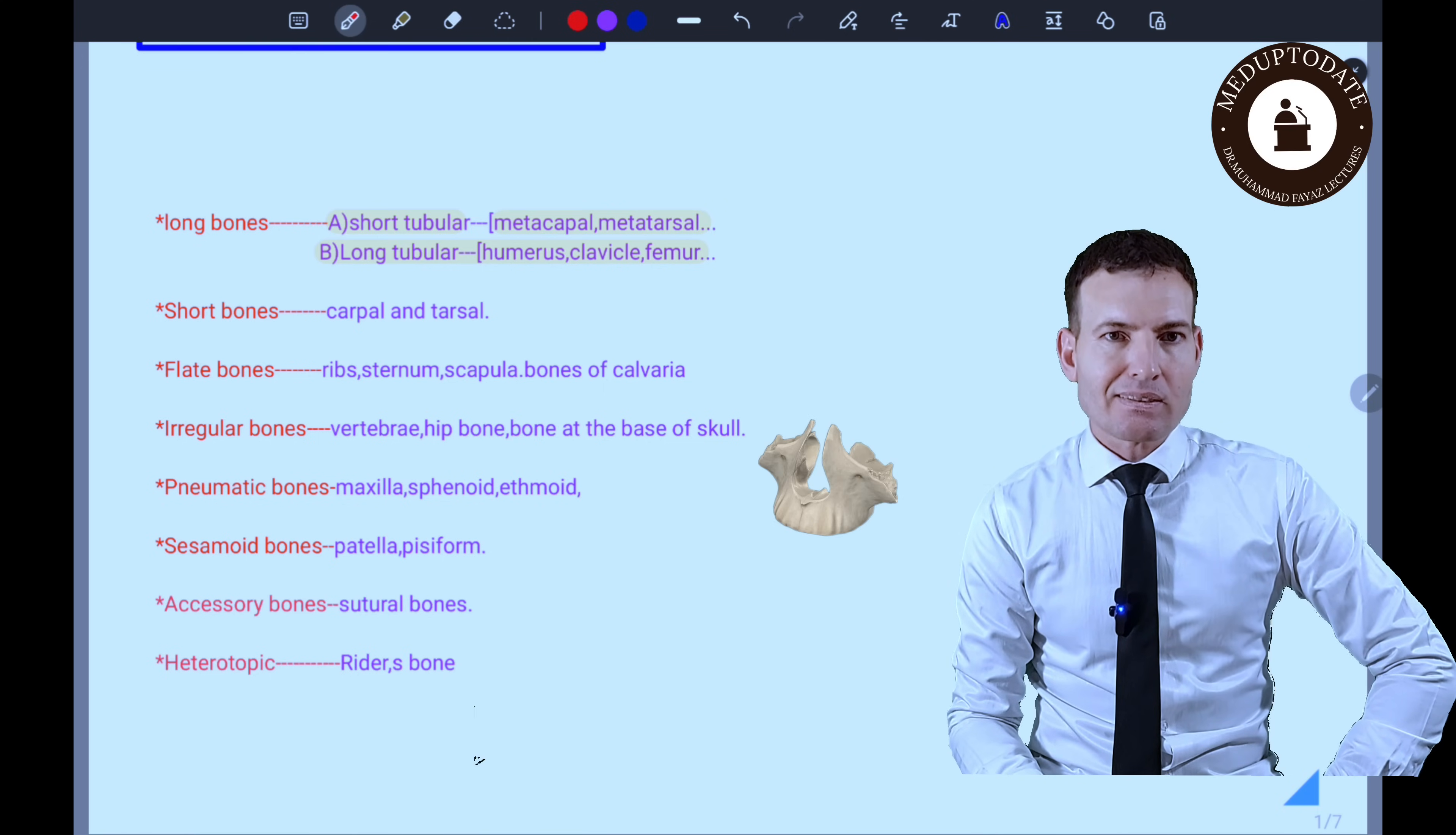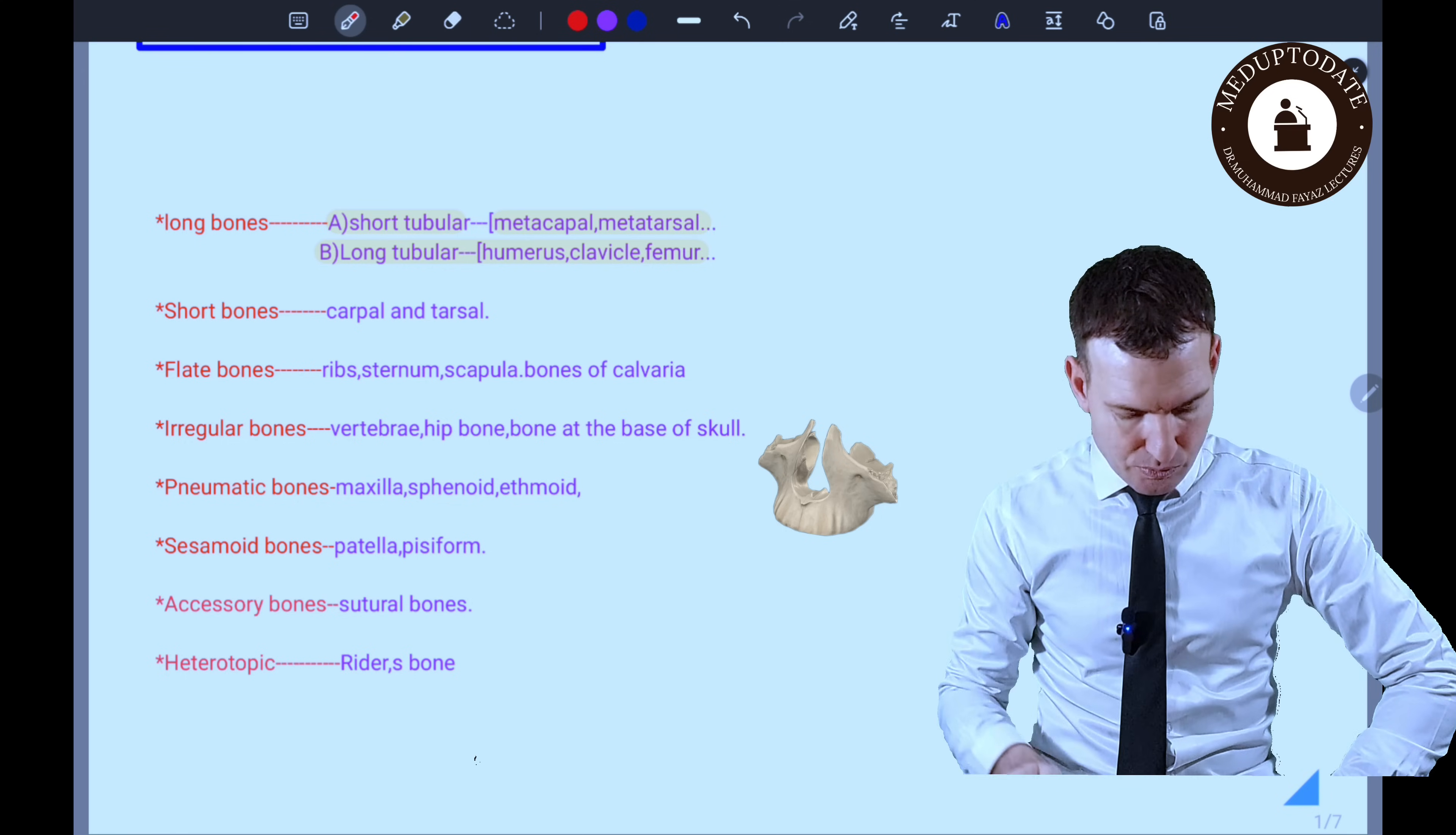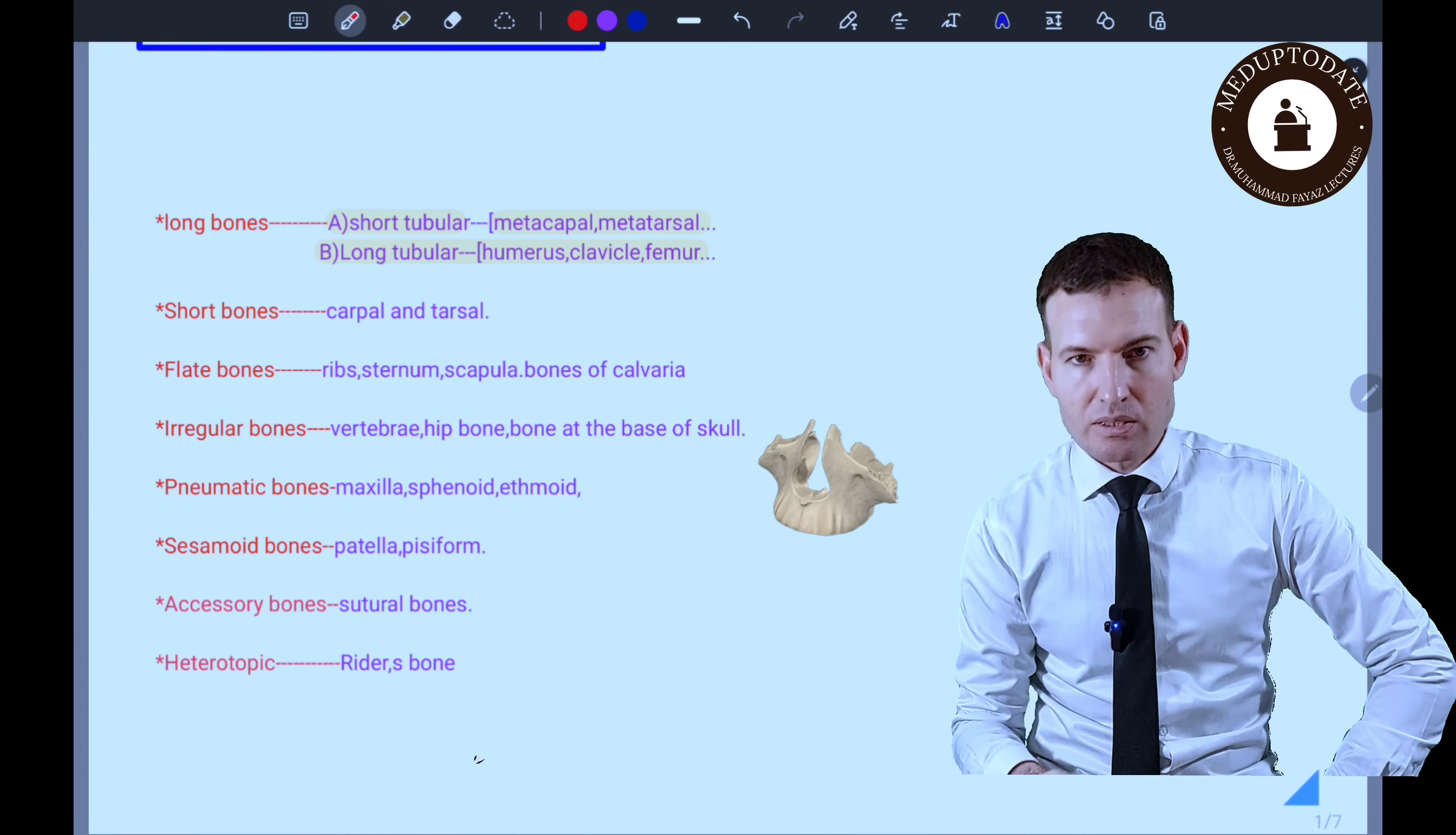Then we have pneumatic bones. The pneumatic bones are those bones that contain air cells. For example, maxilla—we have the maxillary sinus here in the maxilla region—and we have the sphenoid bone posteriorly with the sphenoid sinus. And the ethmoid bone contains three groups of air cells: anterior, posterior, and middle. We'll be discussing that in other topics.